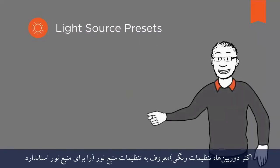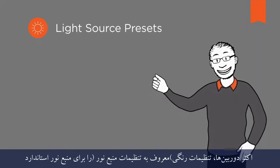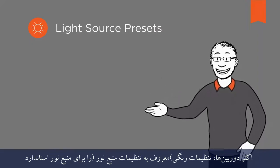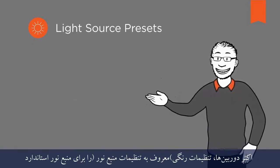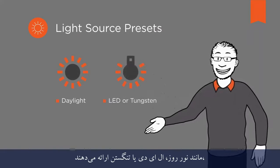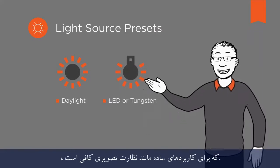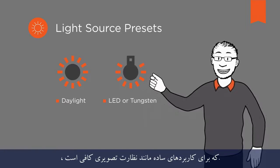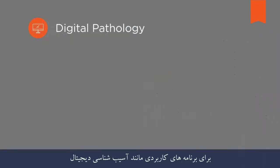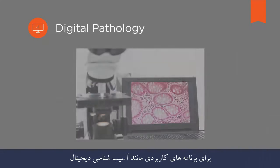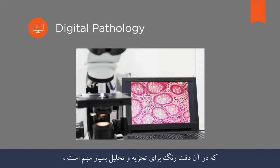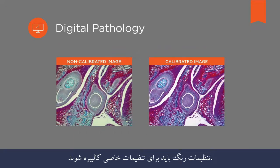Most cameras already offer color presets, known as light source presets, for standard light sources such as daylight, LED, or tungsten, which are sufficient for simple applications such as video surveillance. For more demanding applications such as digital pathology, where color precision is crucial for analysis, the color settings must be calibrated for the specific setup.